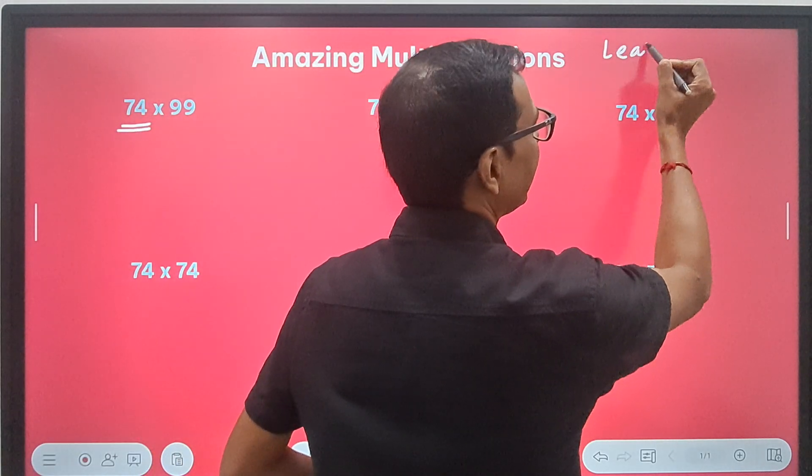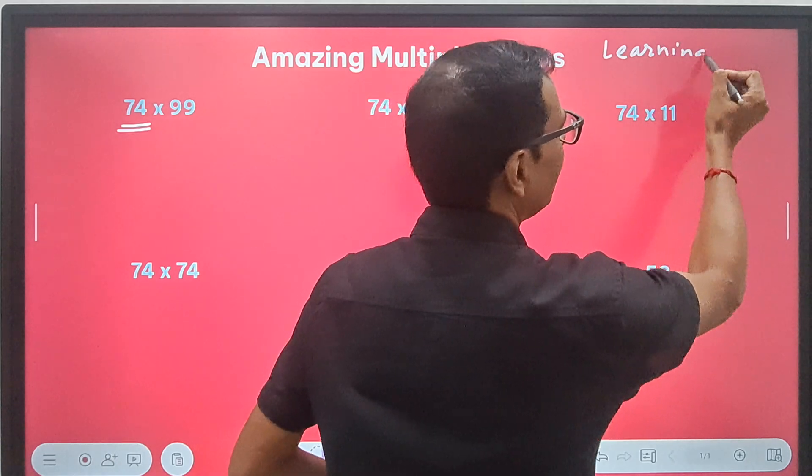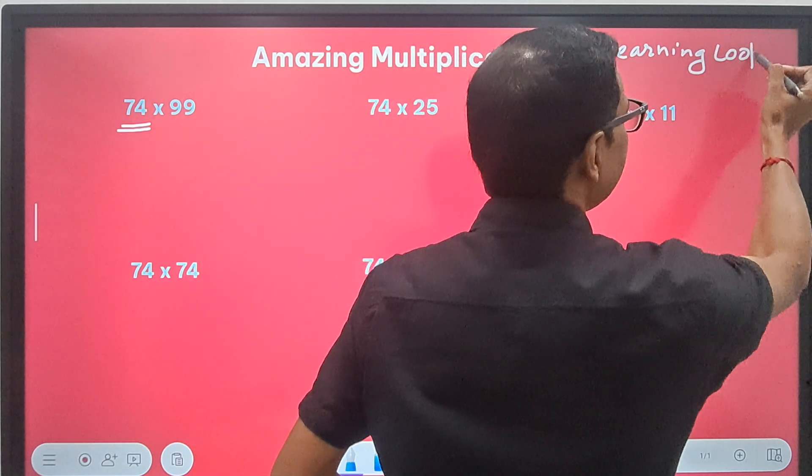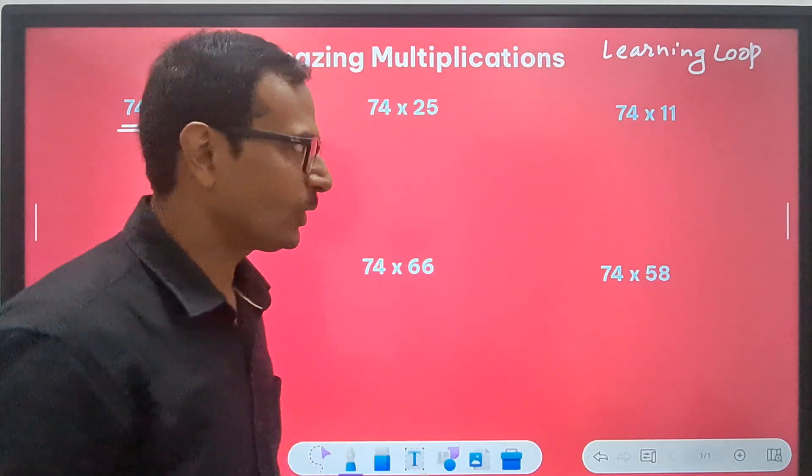You can download the learning loop app from the Google Play Store. You can find the ebook there.